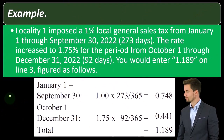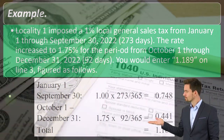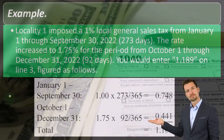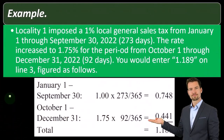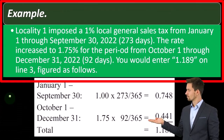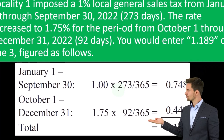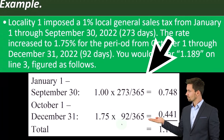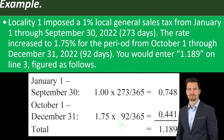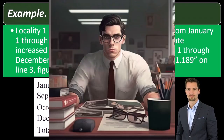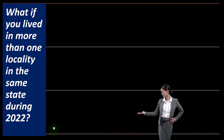Example: locality one imposed a 1% local general sales tax from January 1st through September 30th, 2022 — 273 days. The rate increased to 1.75% for October 1st through December 31st, 2022 — 92 days. You would enter 1.189 on line three, figured as follows: 1% times 273/365, plus 1.75% times 92/365. This ratio-fraction approach comes up often in these types of problems and is a good tool to keep in mind, though hopefully your tax software can apply it in practice.